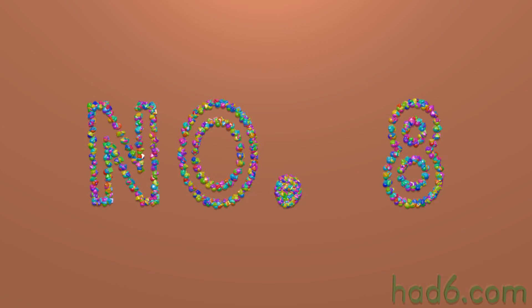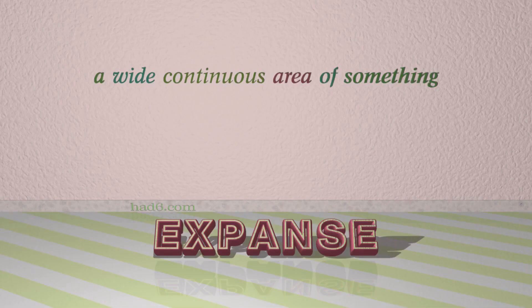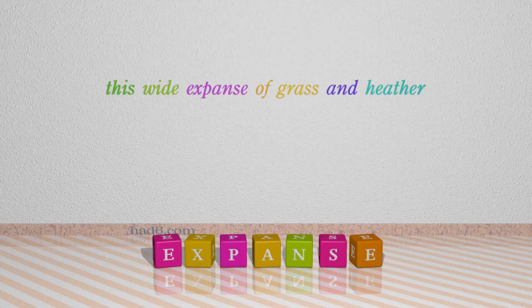Number 8: Expanse. Which means a wide continuous area of something. For example: This wide expanse of grass and heather.